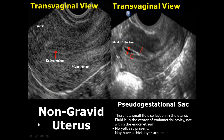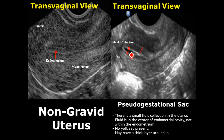A pseudo gestational sac is a fluid collection in the uterus which can mimic a real gestational sac. The main differentiating feature is that it is located centrally in the endometrial cavity rather than being implanted in the endometrium, and sometimes it may be surrounded by a thick decidual layer.